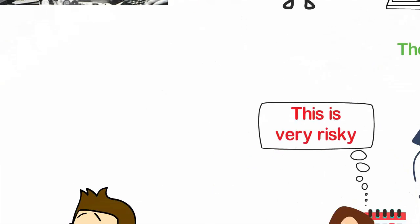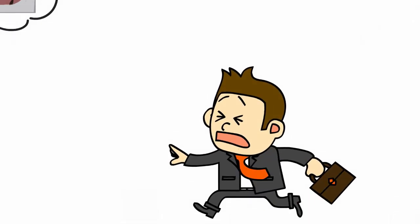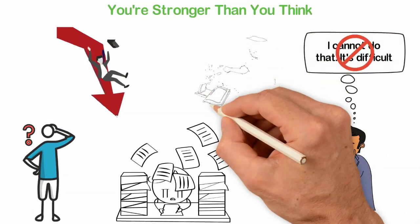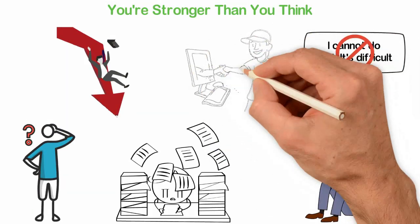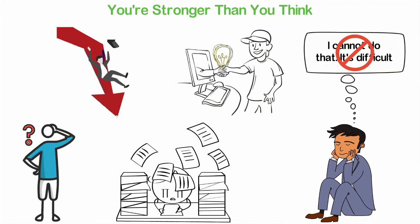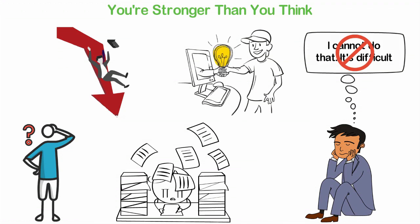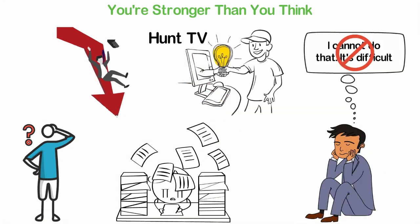Smart people spend too much time analyzing situations. Stupid people jump out and start acting. Some people are simply too smart to take action. Some people like this need daily motivation and that's why we're starting a new channel. We call it Hunt TV and what we do there is to share with you inspirational videos that will keep you inspired as you run after your dreams. Look at the description box to join Hunt TV.